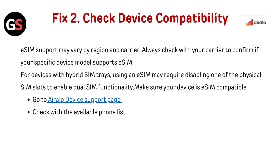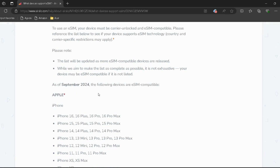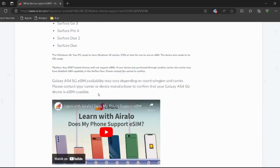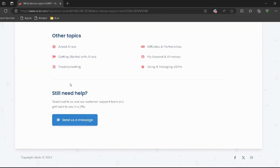Check device compatibility. eSIM support may vary by region and carrier. Always check with your carrier to confirm if your specific device model supports eSIM. For devices with a hybrid SIM tray, using the eSIM may require disabling one of the physical SIM slots to enable dual SIM functionality. Make sure your device is eSIM compatible — go to the AirLo device support page; the link is provided in the description.